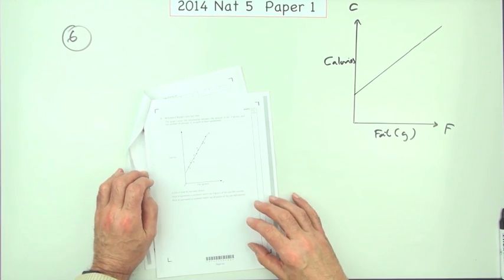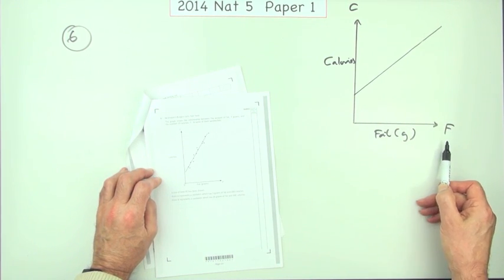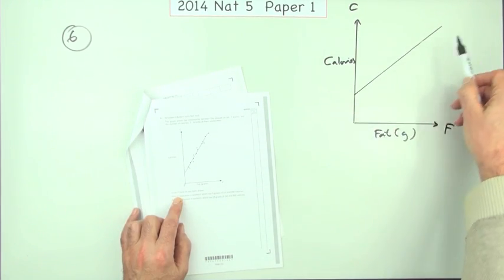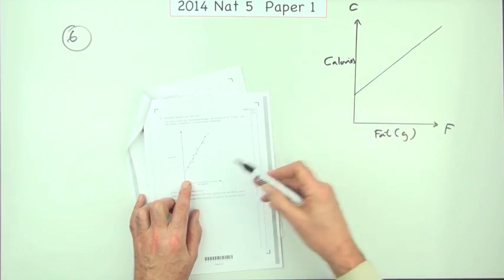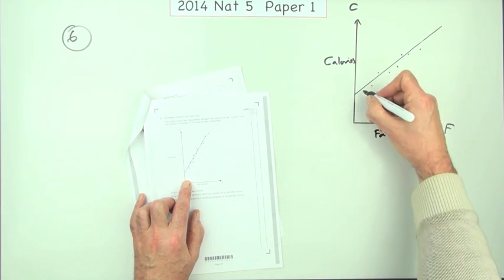McGregor's Burgers sells fast food and this graph shows the relationship between the fat, number of grams, and the calories. A line of best fit has been drawn. Now there's lots of points on it but you'll notice that none of these points that are scattered about in the scatter diagram matter because it puts two in.